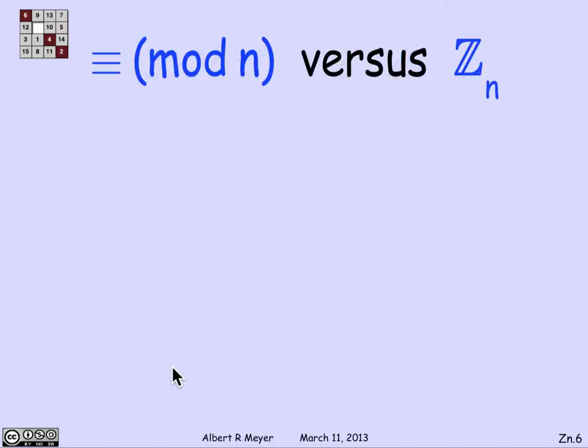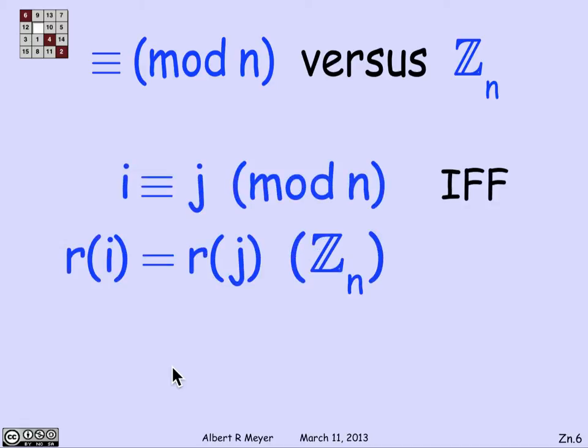What's the connection between equivalence mod n or congruence mod n and Z_n? Well, it's fairly simple. In Z_n, we convert congruences into equalities. So i is congruent to j mod n if and only if r(i) is equal to r(j) in Z_n. And this is just a rephrasing of the fact that two numbers are congruent if and only if they have the same remainder.